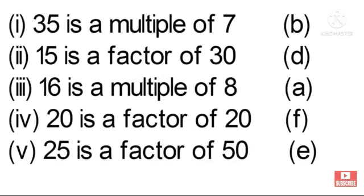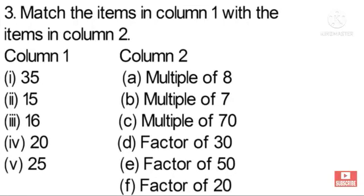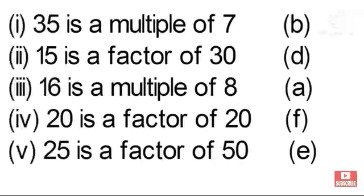35 is a multiple of 7. So let's see, 35 is a multiple of 7. The factors of 35 are 1, 5, and 7. Second, 15 is a factor of 30.